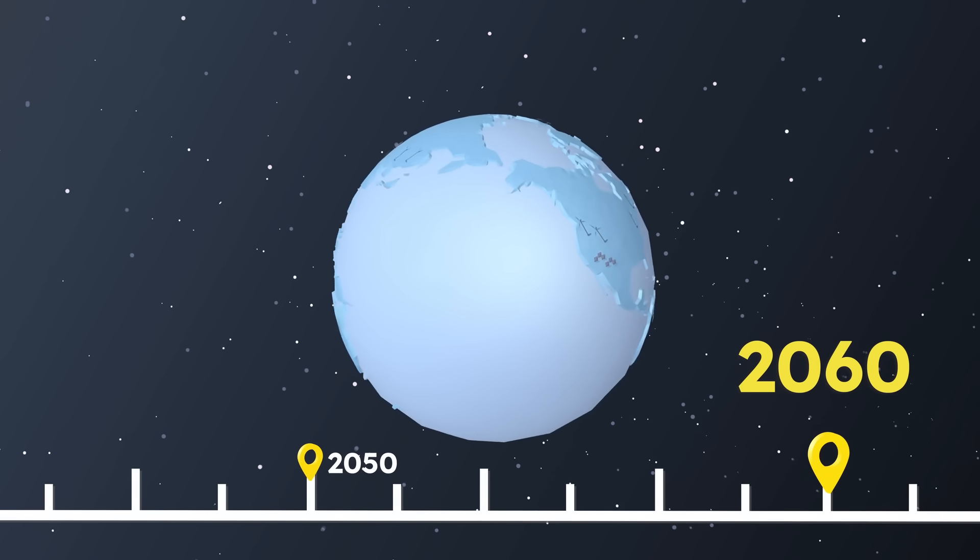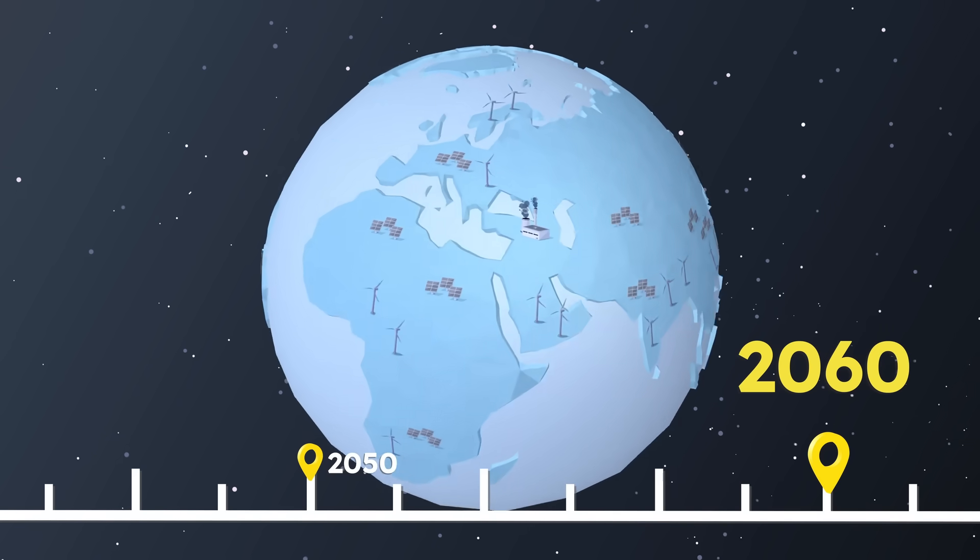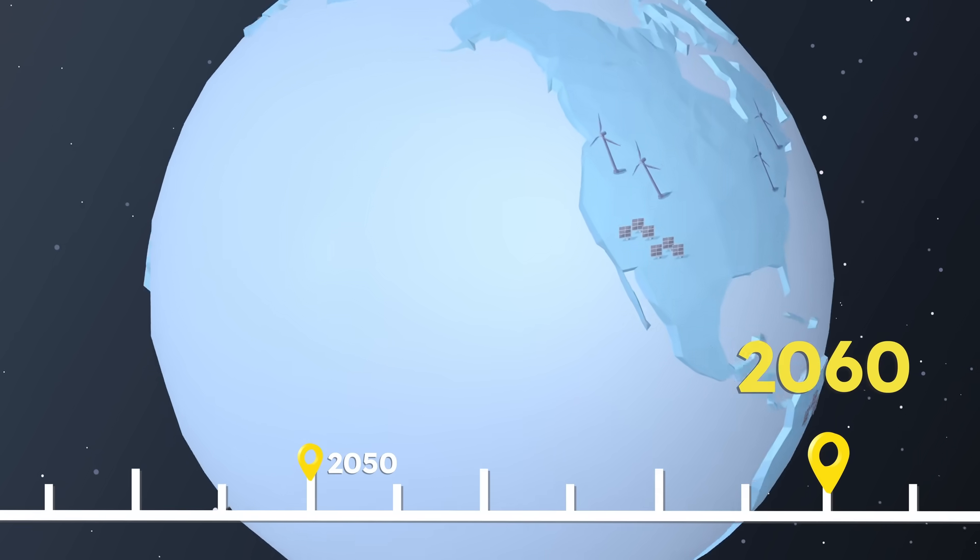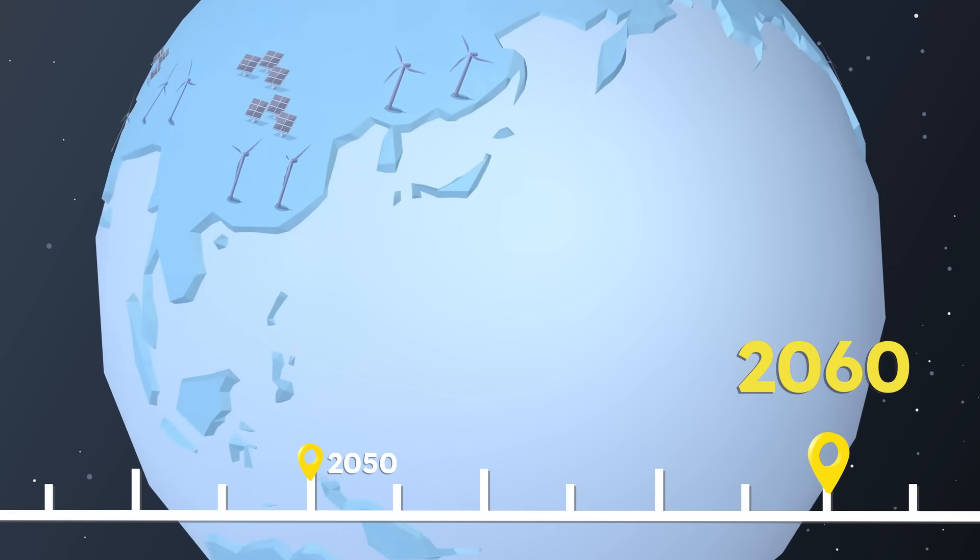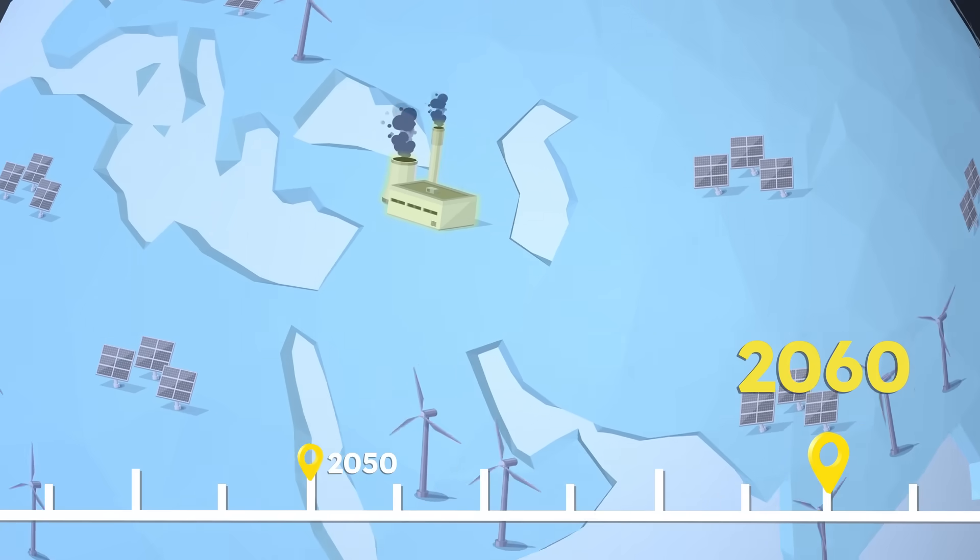The year? 2060. Humanity is about to close the last fossil fuel power plant on Earth. At last, the world will run entirely on clean energy. How will we do it? By building better power plants, clean ones.